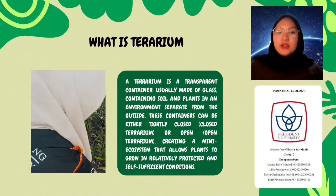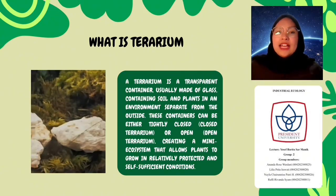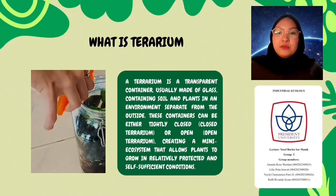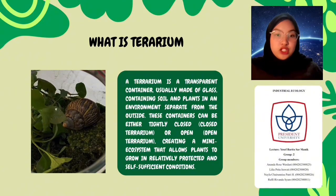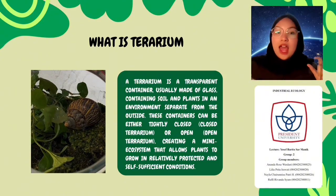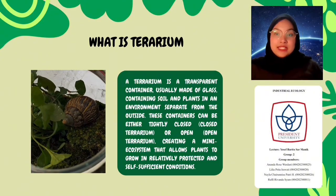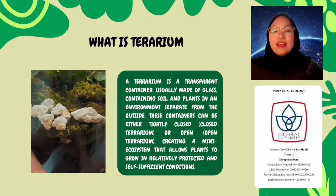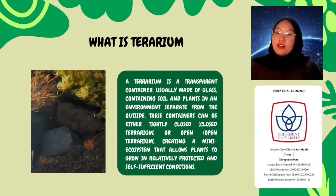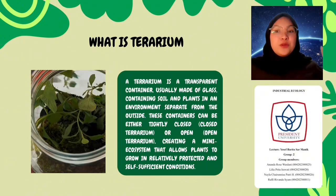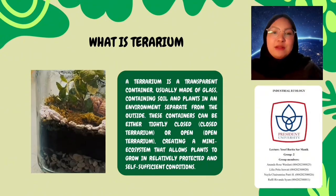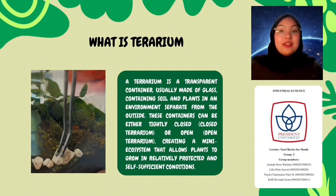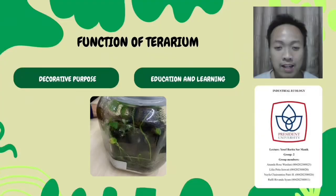How does a terrarium work? Inside a terrarium, you can witness the fascinating cycles of nature on a small scale. The plants photosynthesize using sunlight, generating oxygen. Water that you add gradually evaporates, condenses on the glass, and then rains back down into the plants and soil — just like the water cycle in a real forest. Now we're talking about the function of the terrarium itself.